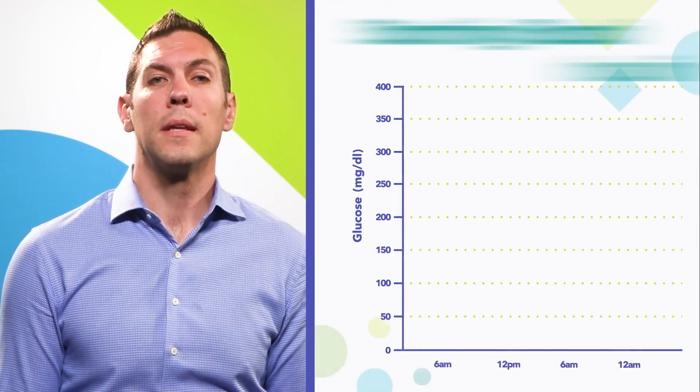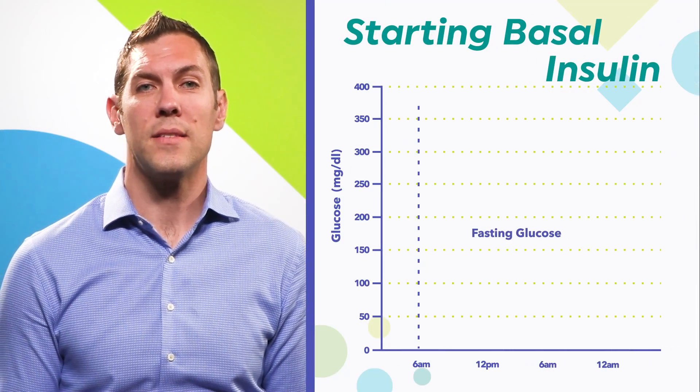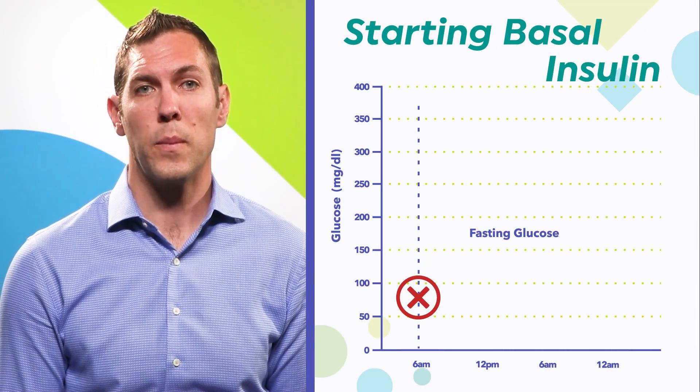This can be initiated at whatever time is best for the patient to remember to take their insulin. If a patient's average fasting blood glucose is greater than 200 milligrams per deciliter, I'll start them at 0.2 units per kilogram rather than 0.1 units per kilogram.